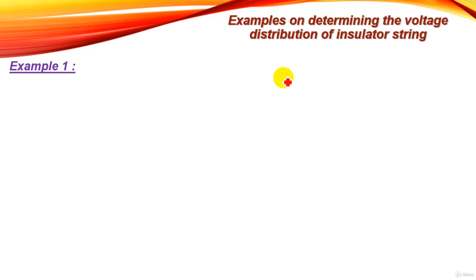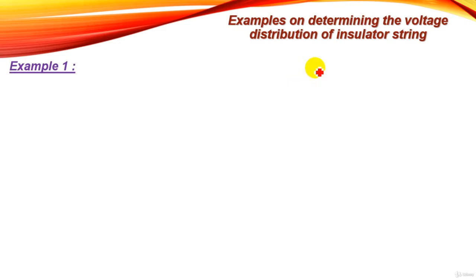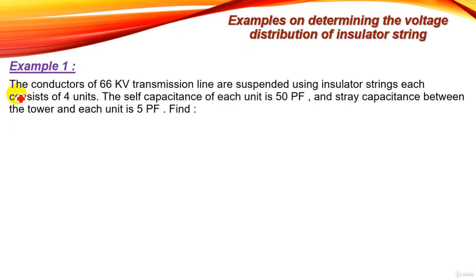Hello and welcome everyone. In this tutorial we will see examples on determining the voltage distribution of an insulator string, considering the practical configuration and the stray capacitances, and what is the effect of the unequal distribution of voltages across the insulator string. Now let's see Example 1.